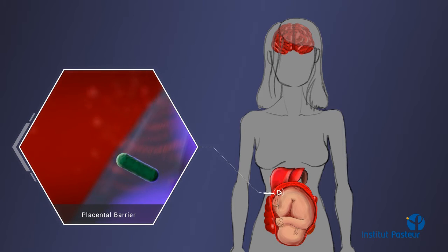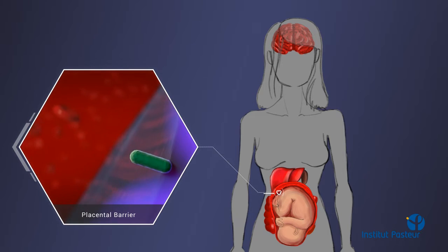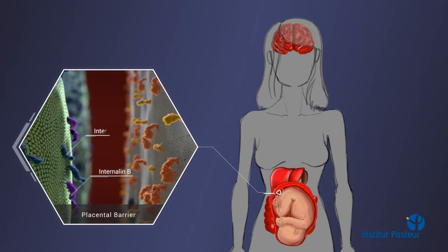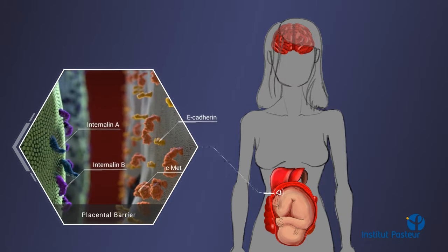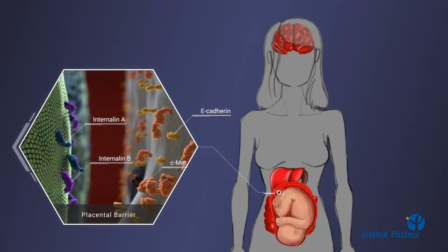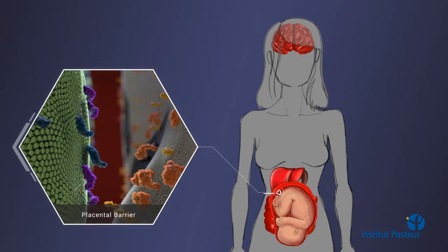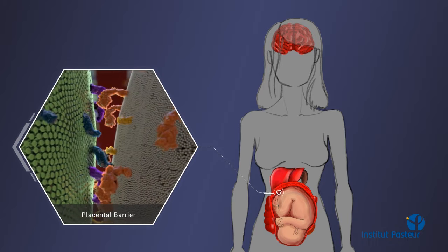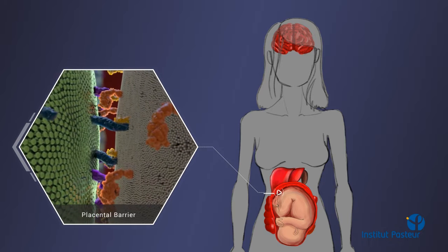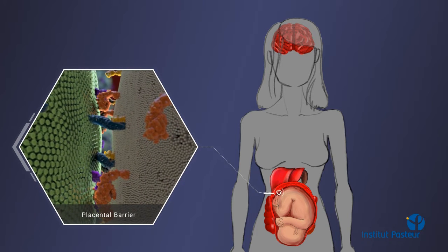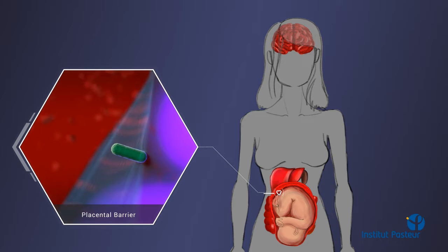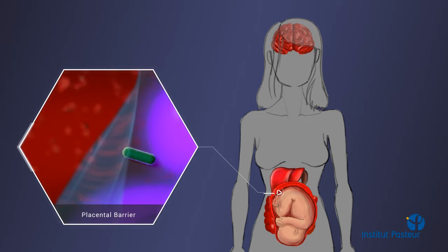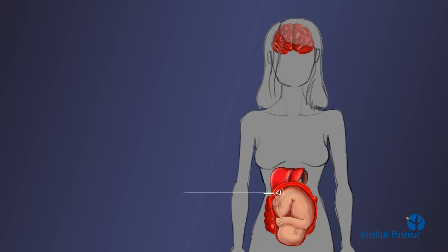At the syncytiotrophoblast, the bacterium binds to two surface receptors, E-cadherin and C-met, via two surface proteins, internalin and internalin B respectively, allowing traversal of the placental barrier and infection of the otherwise protected foetus.